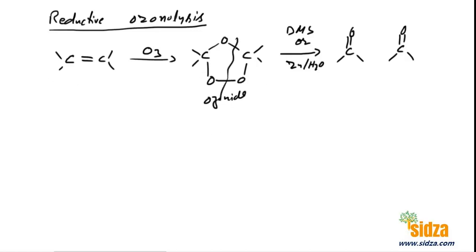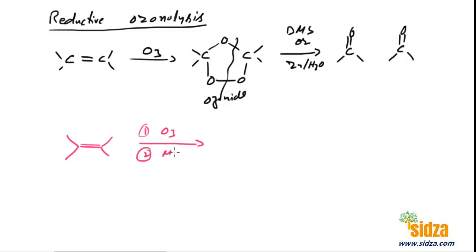Let's take an example with an alkene. If you have an alkene and you react it with ozone and then do the reduction with DMS, just break the double bond and put two oxygen atoms on the carbons. You get one molecule with a double-bonded oxygen and another molecule with a double-bonded oxygen — so these are the two ketones you get from this alkene.